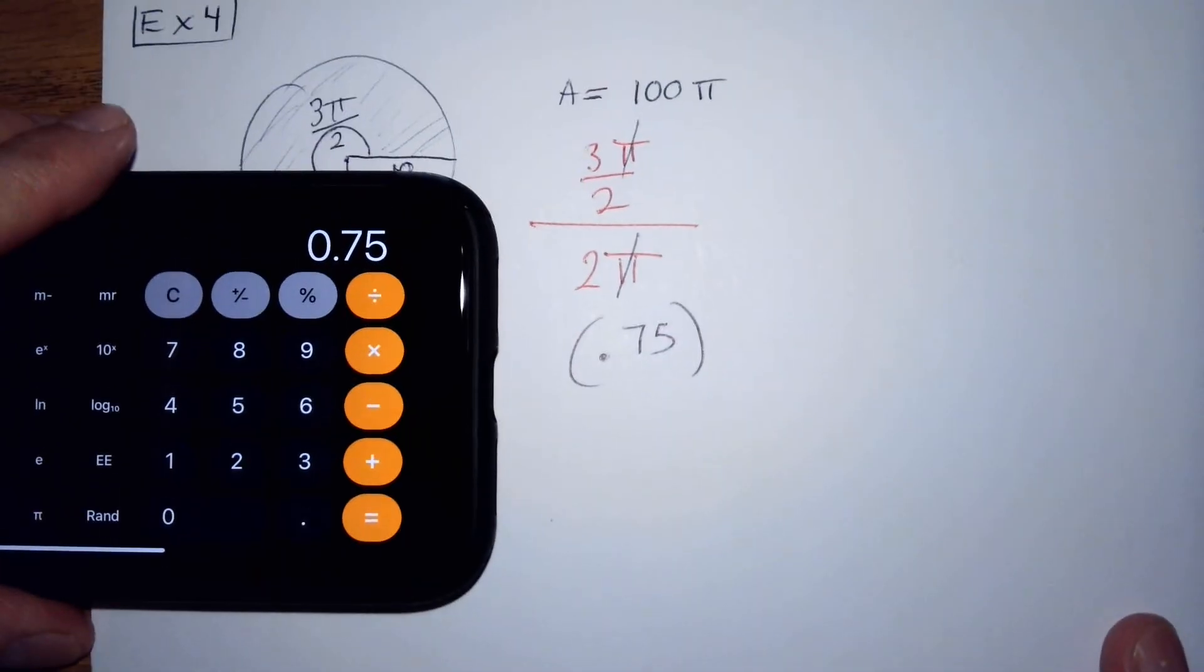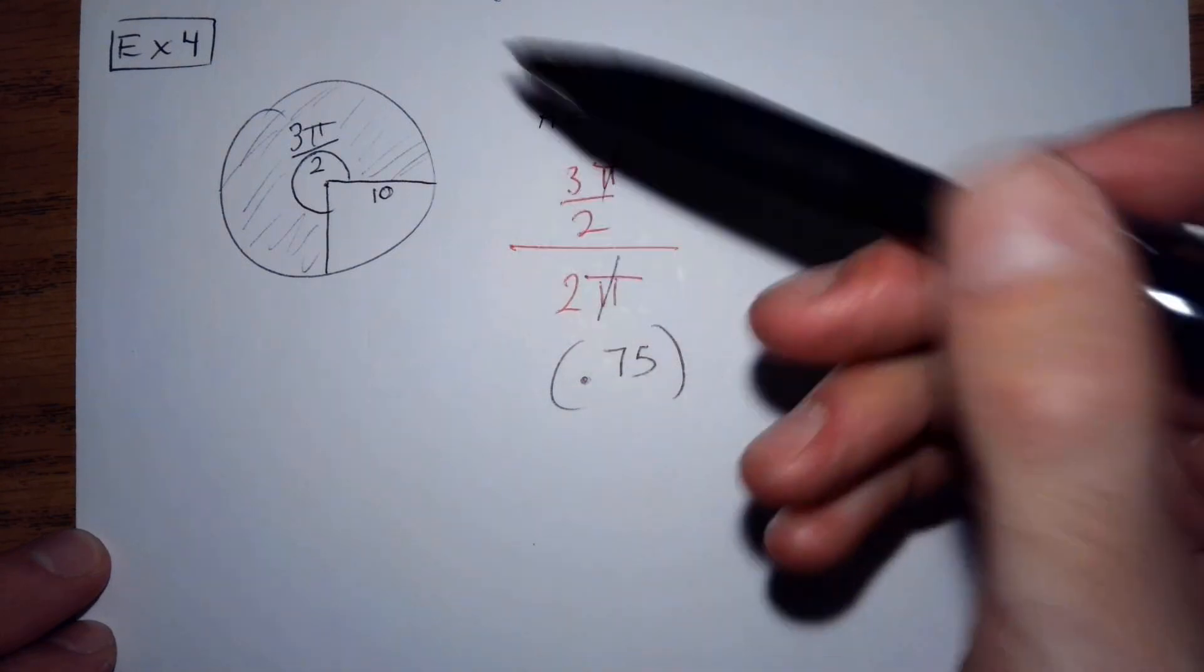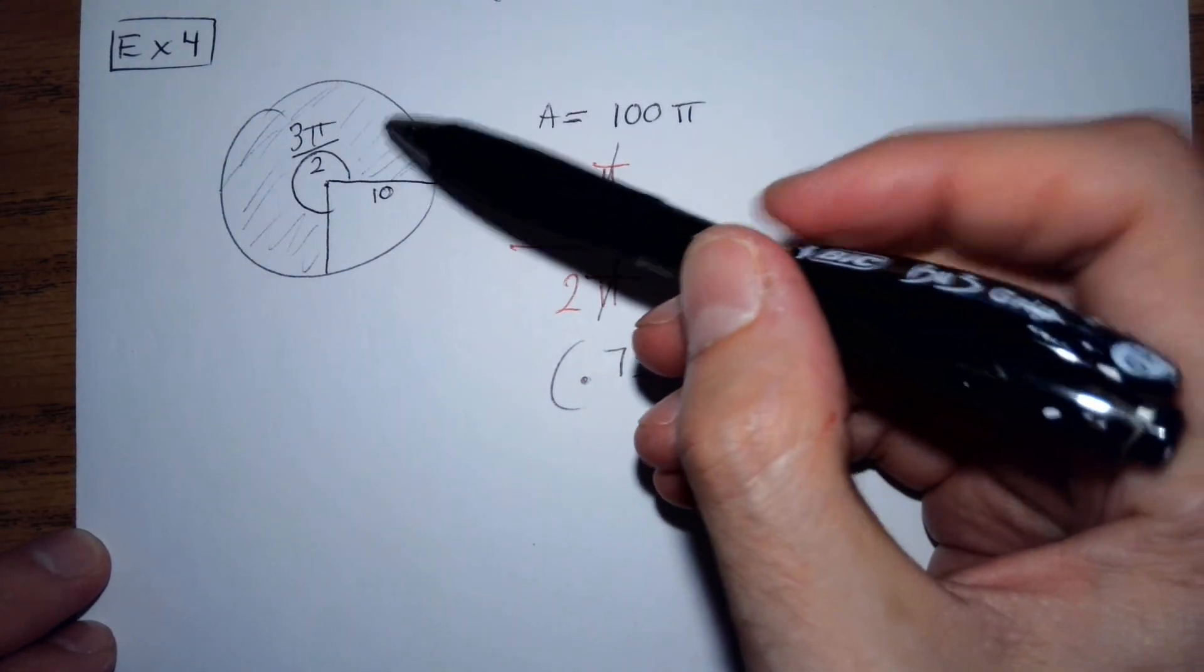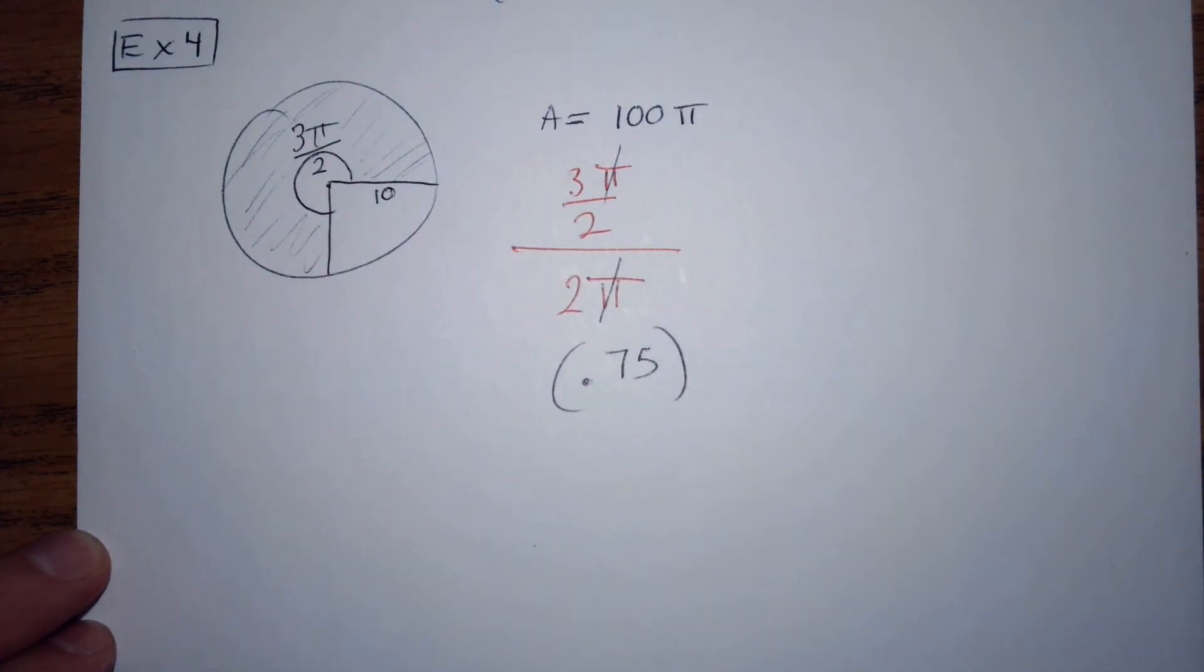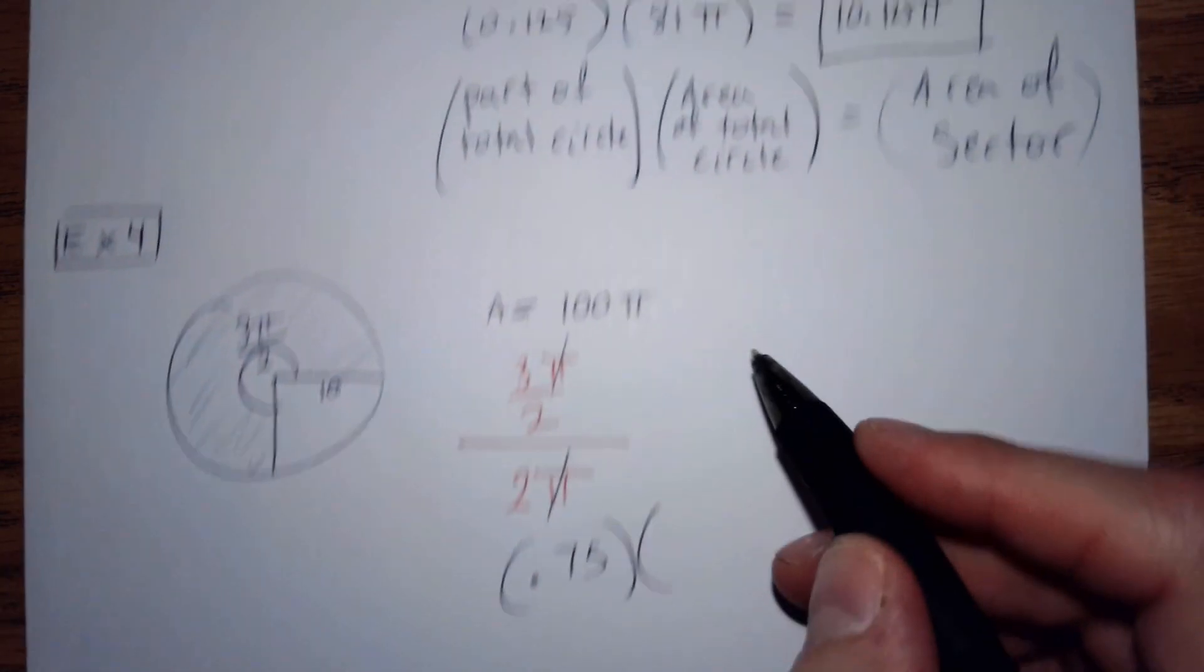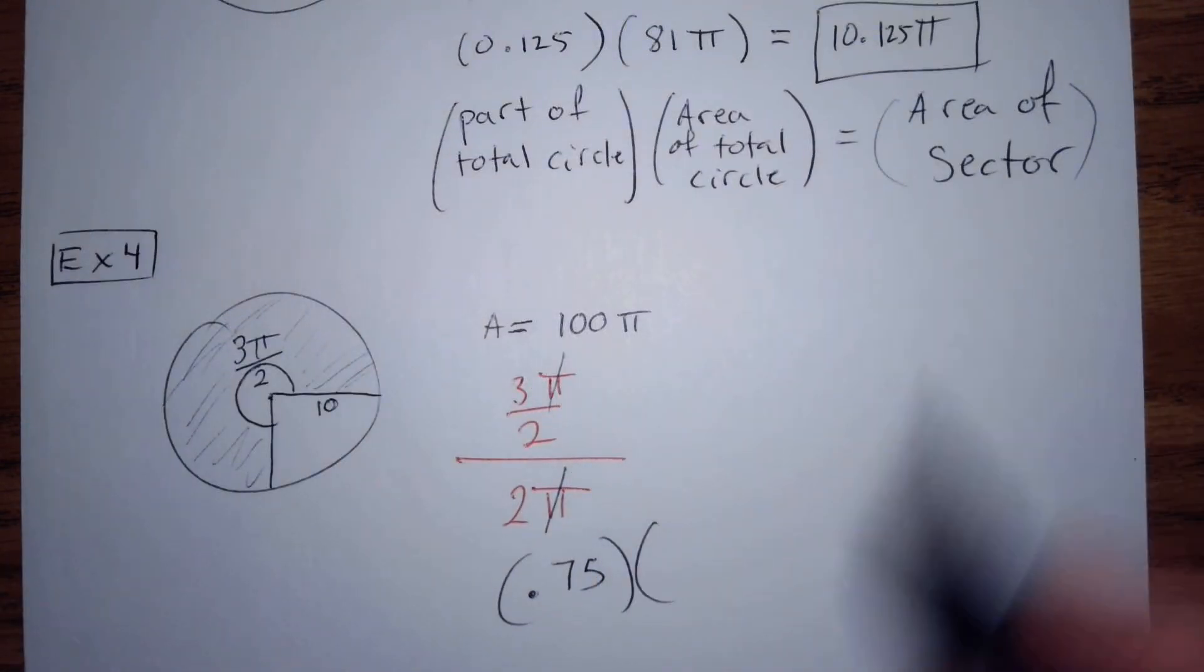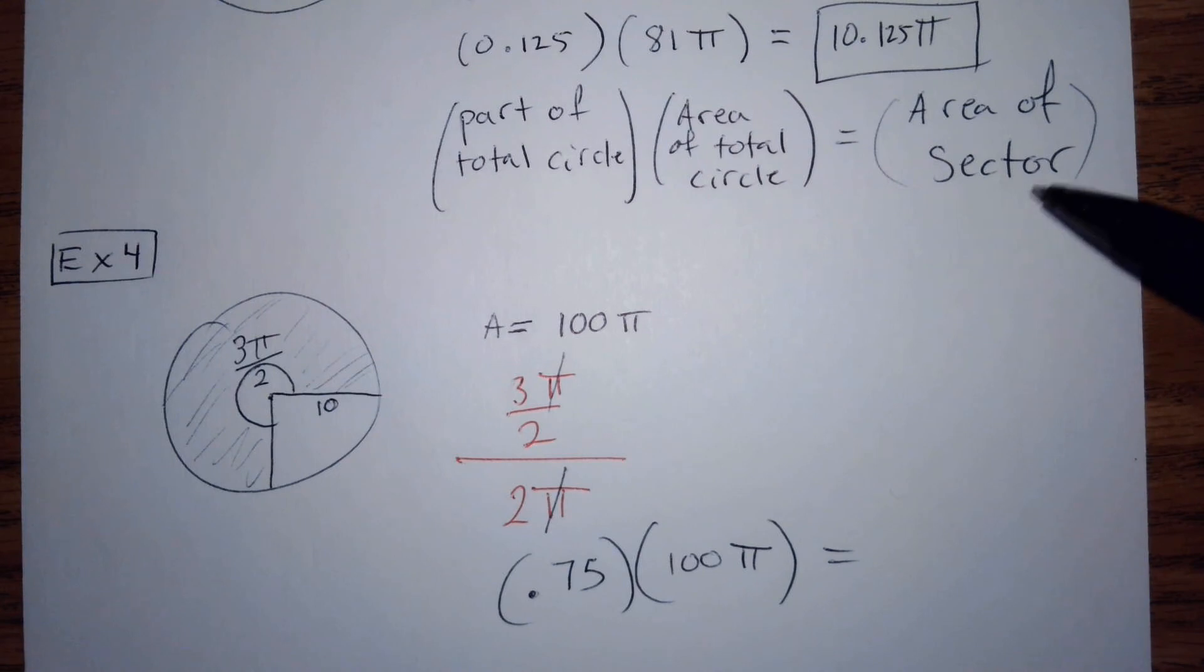So 0.75 of this entire area is what we're looking for. 0.75 is 3 quarters, 1, 2, 3 out of the 4 quarters. So 0.75 times the total area, that would be 100 pi, and that gives me the area of the sector.